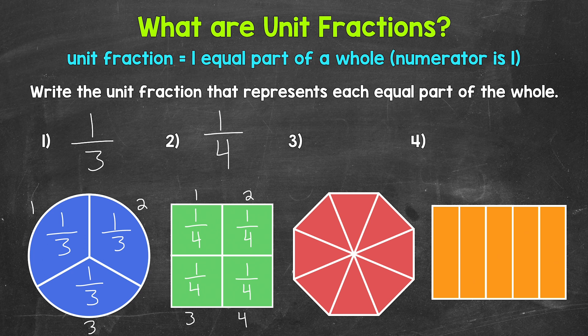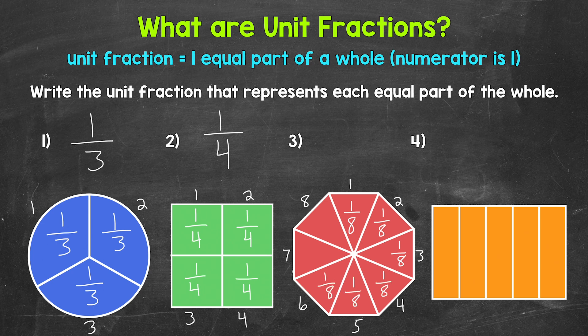Let's move on to number three. We start by seeing how many equal parts the whole has been divided into — one, two, three, four, five, six, seven, eight equal parts. Each equal part is one out of eight total equal parts. Our unit fraction here is one eighth. Every part of this shape is one eighth of the whole. So one eighth is the unit fraction that represents each equal part of the whole.